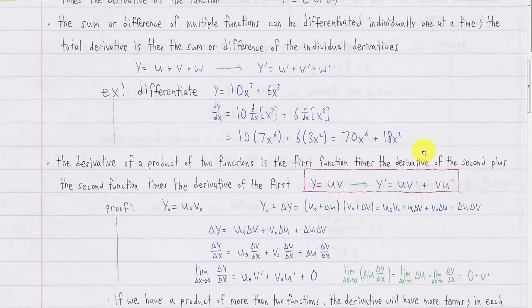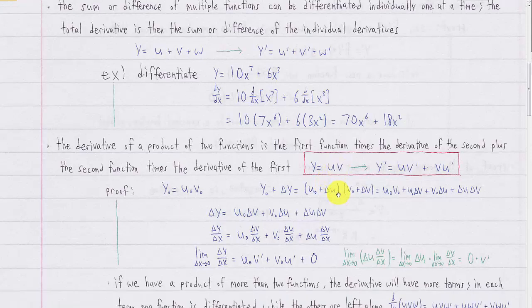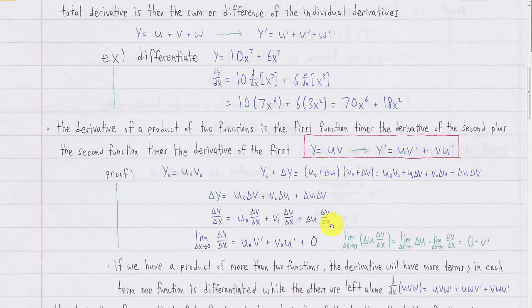We can also extend the product rule to products of more than two functions. If you have more than two functions, the derivative will have more terms. For three functions, the derivative will have three terms, and in each term you take the derivative of one function and leave the others alone. If you have five functions being multiplied, your derivative will have five terms, each with the derivative of one function and the other four left alone.